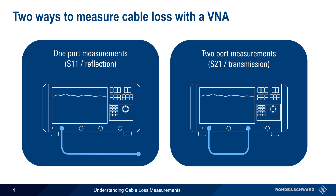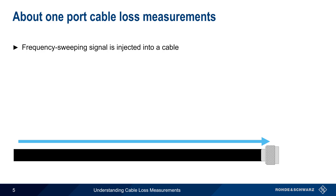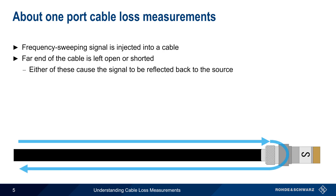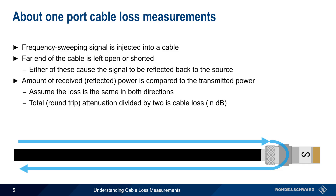We'll cover both of these methods in this presentation, starting with one-port measurements. In one-port measurements, a source or tracking generator is used to inject a signal into a cable. The frequency of the signal is swept over a user-defined range. The far end of the cable is either left open or is terminated with a short. Either of these conditions will cause the signal reaching the end of the cable to be reflected back to the source. At the source port, the amount of reflected power is compared to the known transmitted power. Assuming the loss is the same in both directions, the total or round-trip attenuation divided by 2 is the cable loss in dB.